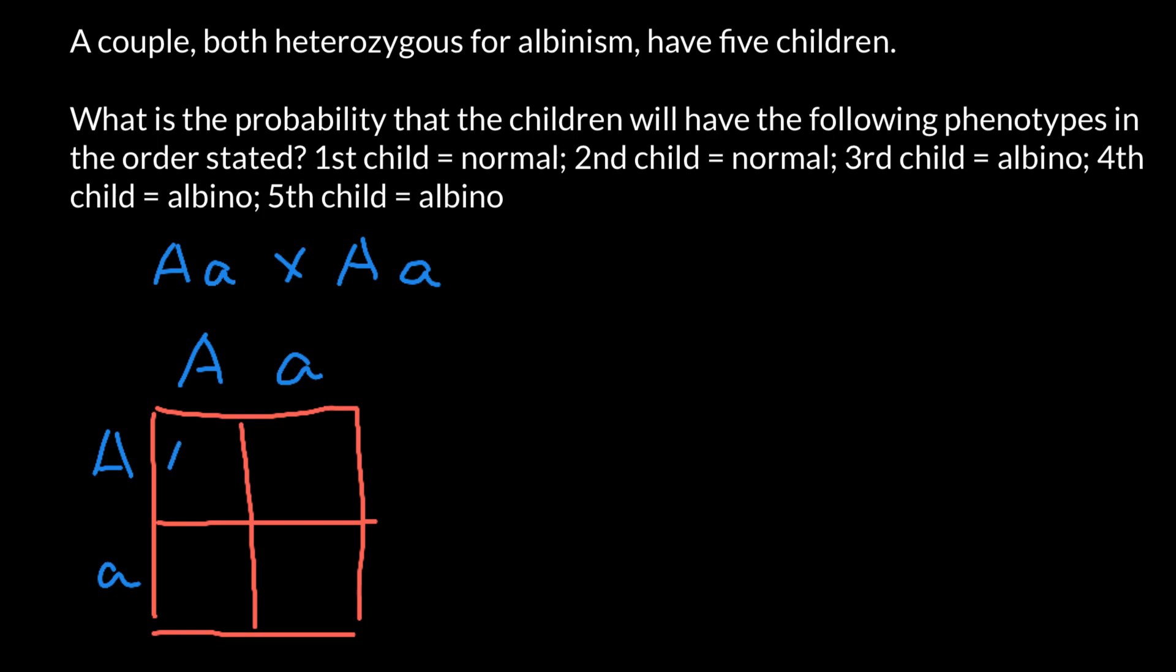So here we have capital A capital A, capital A small a, capital A small a here, and small a small a here. According to our Punnett square, three quarters of the progeny are going to be phenotypically normal, and one quarter of the progeny are going to be affected, so going to be albino.